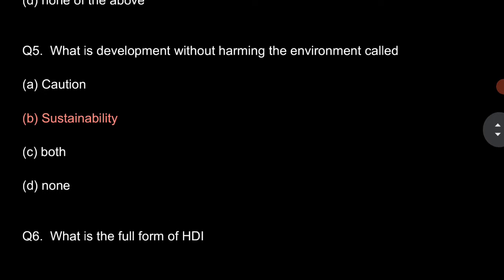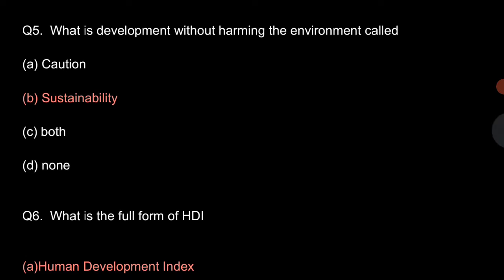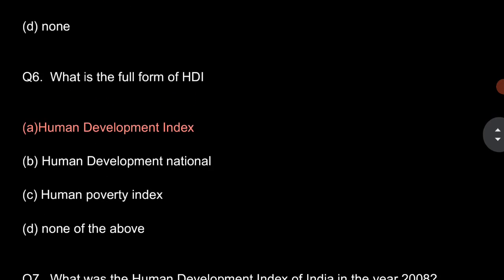Question number 5: What is development without harming the environment called? So, it is sustainability, and option B is the correct option.